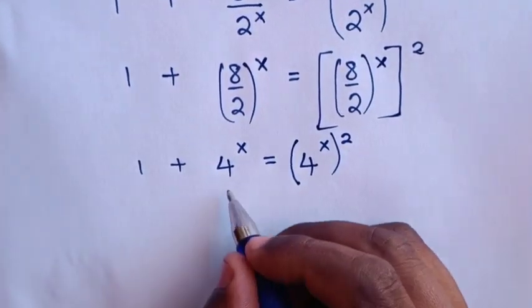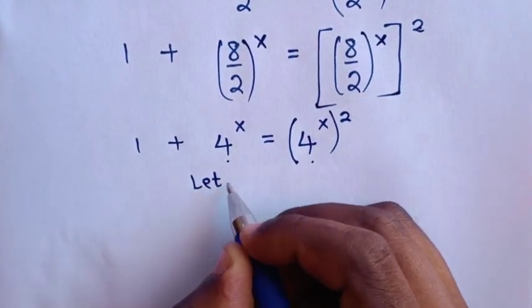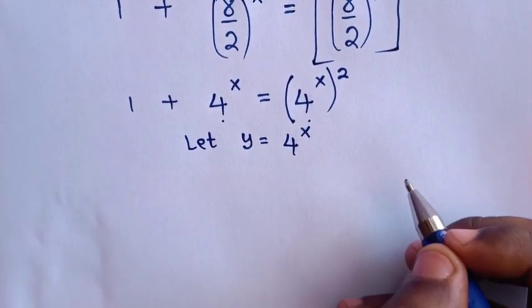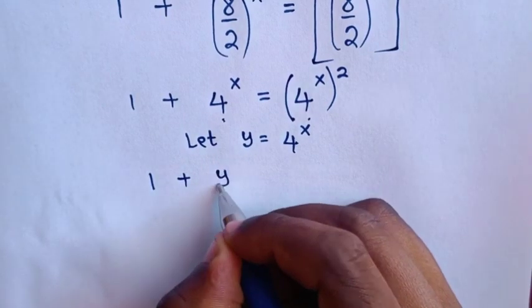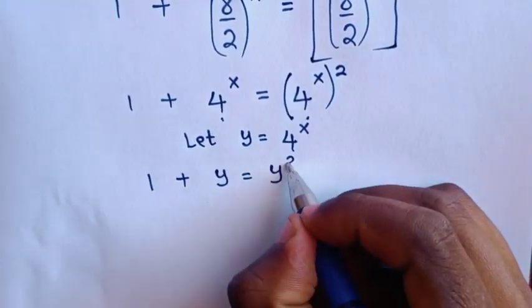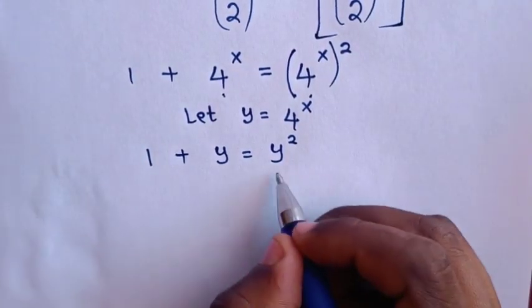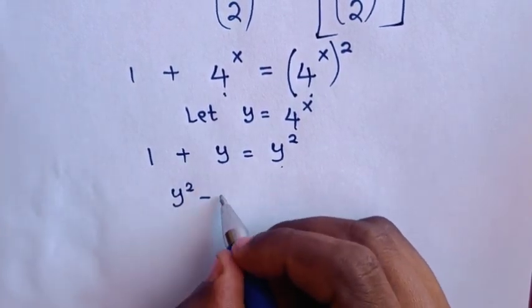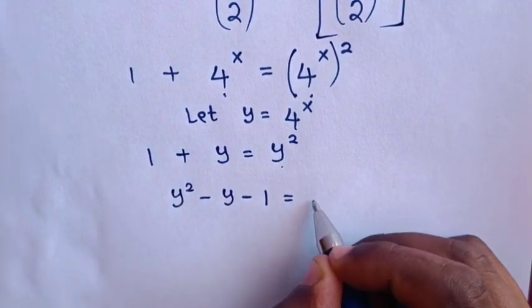In the next step, since 4^x is common, we let y = 4^x. Substituting into our equation gives 1 + y = y^2. Rearranging by moving all terms to one side: y^2 - y - 1 = 0.